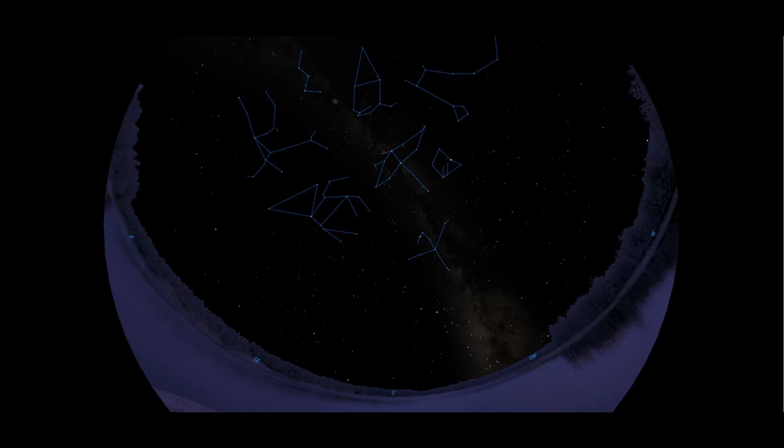To the right of Lyra, we find our next constellation, Hercules, the strong man. That square is the asterism called the Keystone, and from there you might be able to make out the rest of him, a man running along whilst brandishing a large club.